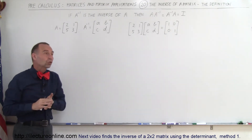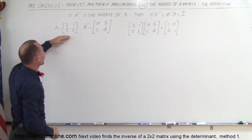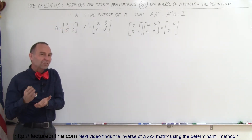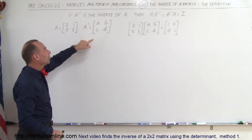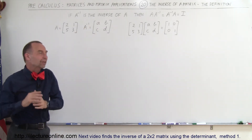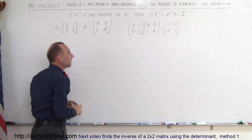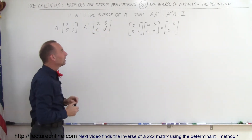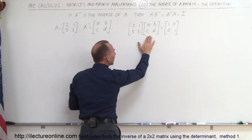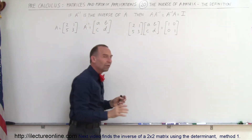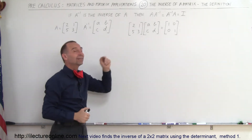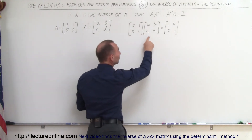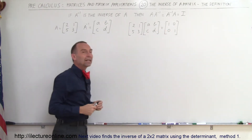Now let's say we have a matrix A with elements 2, 1, 5, and 3. Let's imagine that matrix has an inverse, and we write it as A inverse. Since we don't know what the elements of the inverse matrix are, we can write them as A, B, C, and D — they're at this point unknown. Since the rule tells us that we can multiply matrix A times its inverse and get back the identity matrix, we should be able to figure out what A, B, C, and D are. So I'm going to multiply these two matrices and set them equal to the elements of the identity matrix.